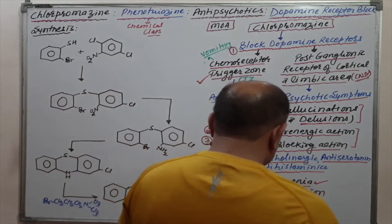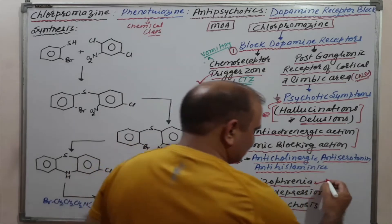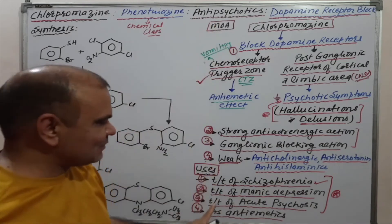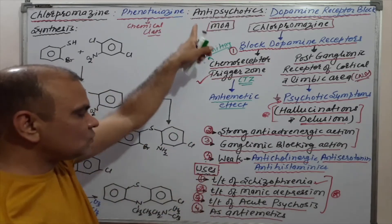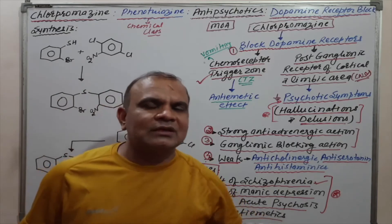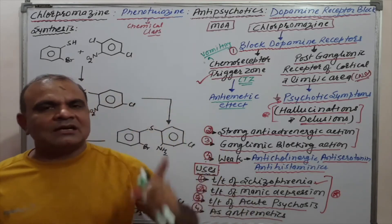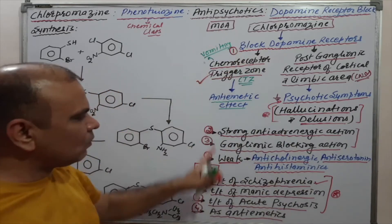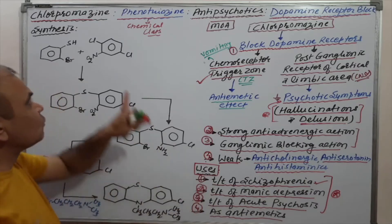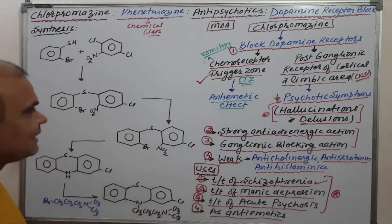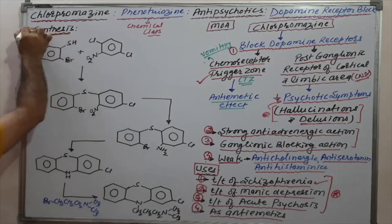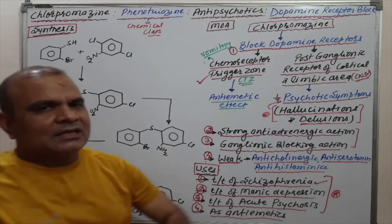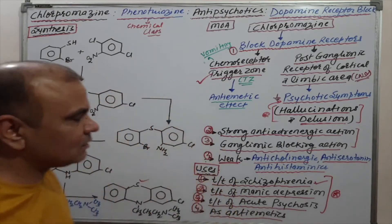These are very promising usages of Chlorpromazine. This covers mechanism of action as well as usage. These points are very important for the Pharmacist exam, DCO exam, and multiple choice questions in competitive exams. Now let's come to the synthesis — how it can be synthesized. If you know the structure of Chlorpromazine, you will easily understand the synthesis and the steps involved.